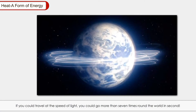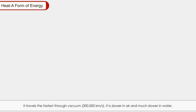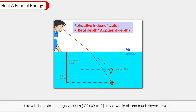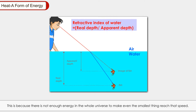If you could travel at the speed of light, you could go more than 7 times around the world in one second. However, light travels through different mediums at different speeds. It travels fastest through a vacuum, slower in air, and much slower in water. Scientists believe that nothing can travel faster than light, because there is not enough energy in the whole universe to make even the smallest thing reach that speed.